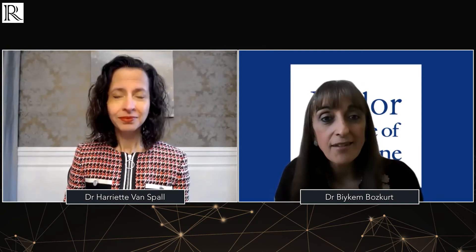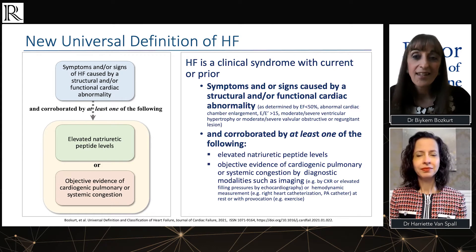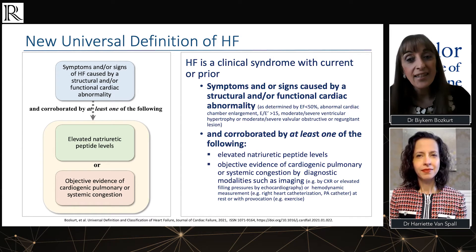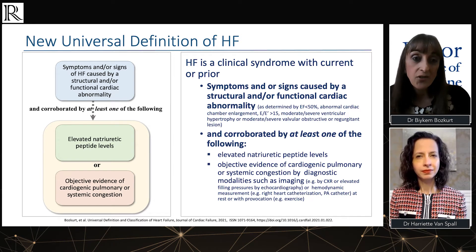That highlights the importance of this new definition. Why don't you tell us about the new universal definition and classification system proposed in this document? We have four major components. The first is the syndrome definition. We specify heart failure as a clinical syndrome with current or prior symptoms and signs of heart failure, caused by structural and/or functional cardiac abnormality, and importantly, corroborated by at least one of the following: either elevated natriuretic peptides or objective evidence of cardiogenic pulmonary or systemic congestion by diagnostic modalities.